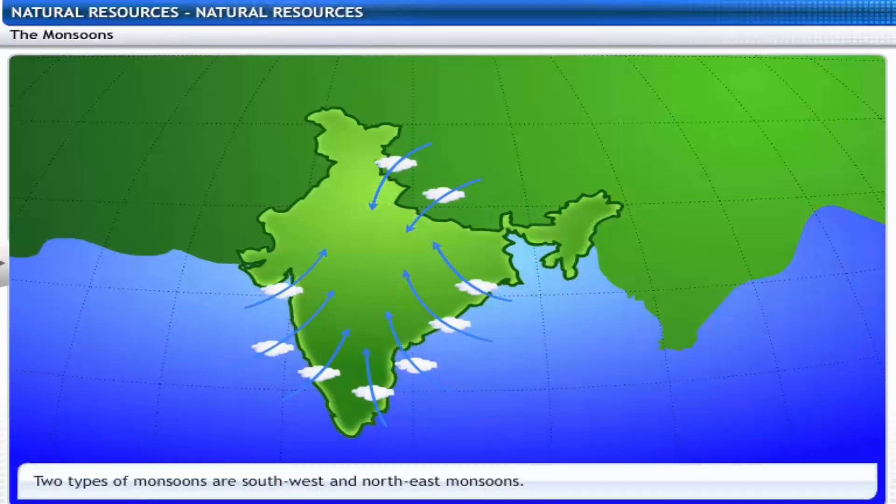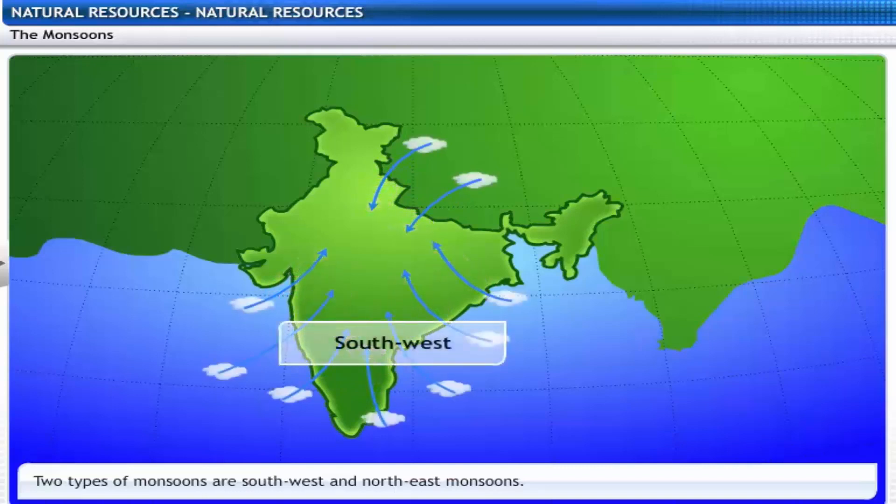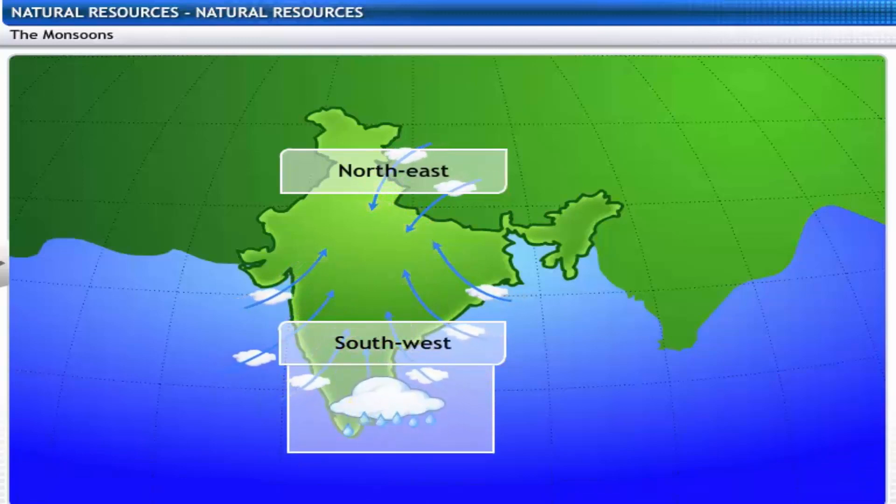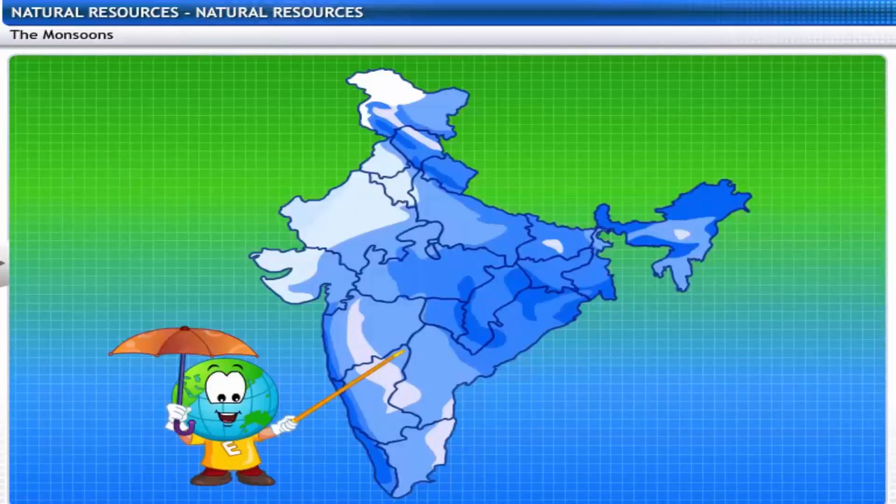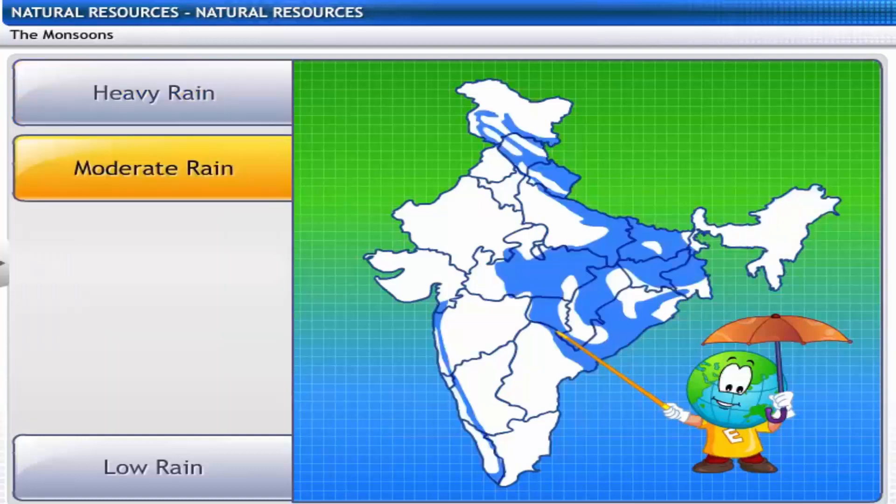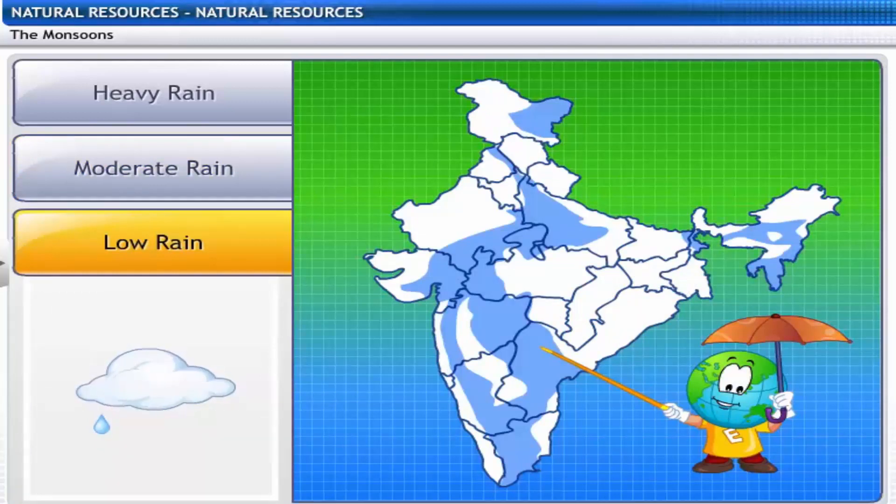There are two types of monsoons, southwest and northeast. Southwest monsoons bring the maximum amount of rainfall for India. This map shows the rainfall pattern of India. These regions in India receive high rainfall and show maximum biodiversity. These regions have moderate rainfall, while these areas receive low rainfall and show minimum biodiversity.